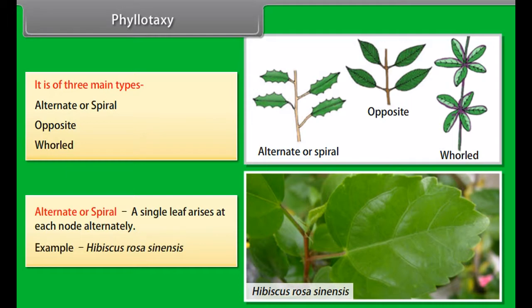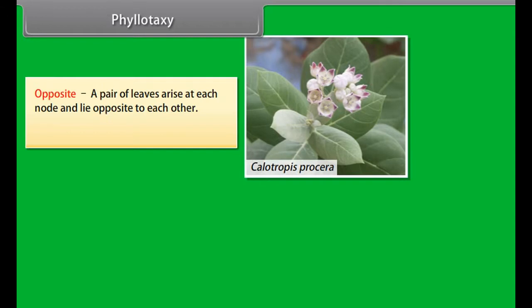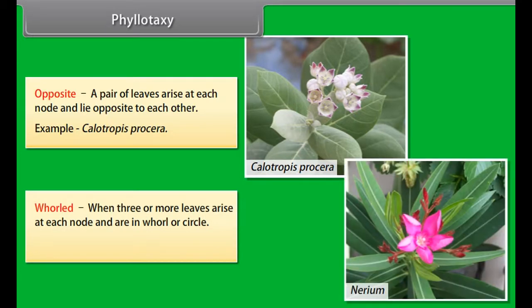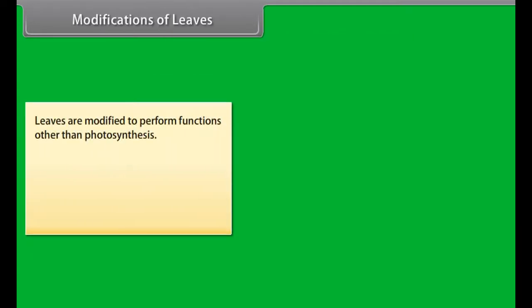Phyllotaxy: The arrangement of leaves on a stem or branch is called phyllotaxy. It results in the orientation of leaves in such a way that they receive maximum sunlight to perform photosynthesis. It is of three main types: alternate or spiral, opposite, and whorl. In alternate or spiral, a single leaf arises at each node alternately, for example, Hibiscus rosa-sinensis.